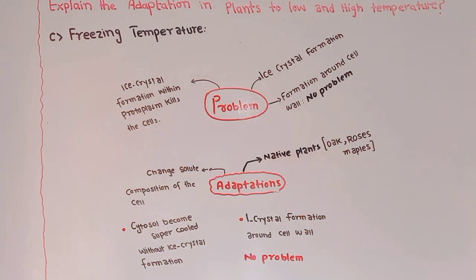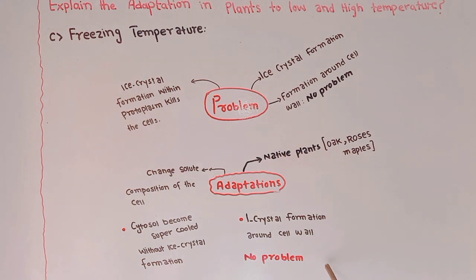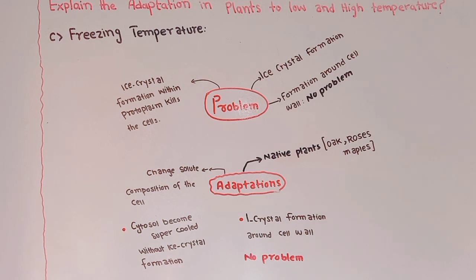So this problem is overcome. Ice crystal formation around the cell wall does not challenge the survival of the plant or harm the plant cells, so formation around the cell wall is no problem for plants.